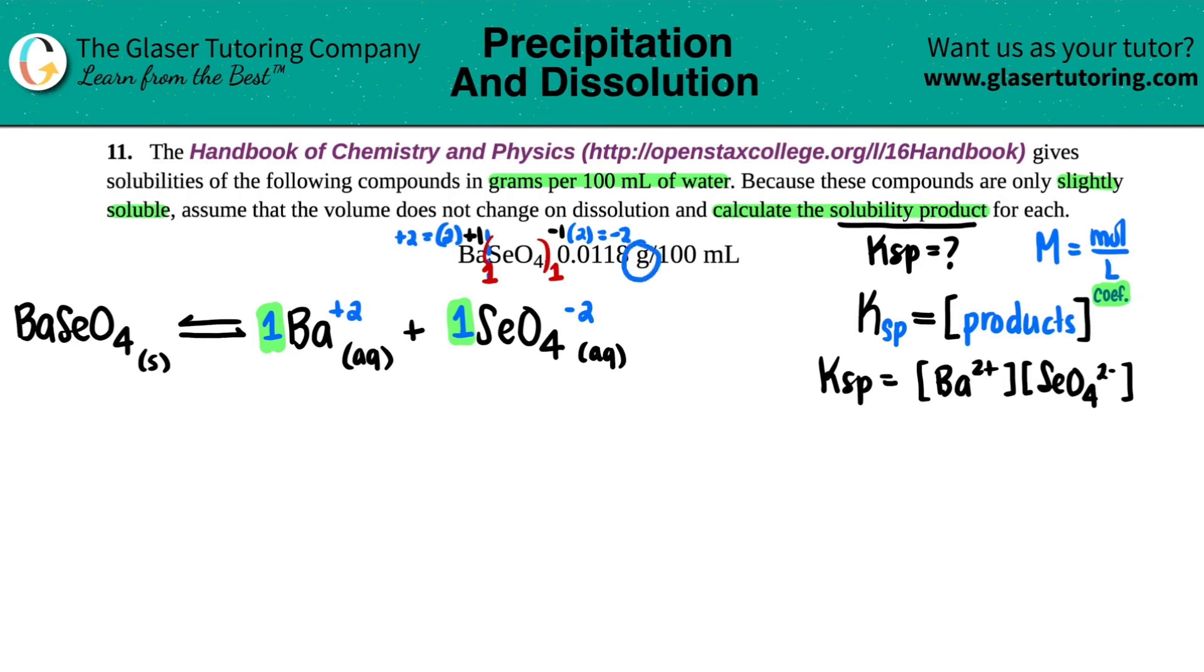So I have to convert the grams into moles and the milliliters into liters. So let's just do some back to basics converting. We love a good conversion. Not really, but it makes the question go by more pleasantly. 0.0118 grams of the original compound. So that was the BaSeO4. And this is per 100 mils.